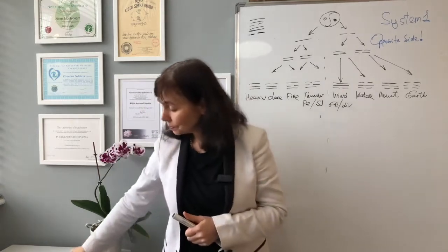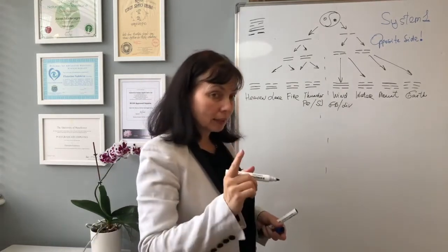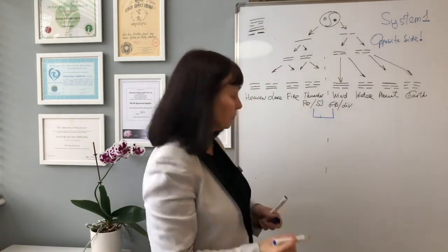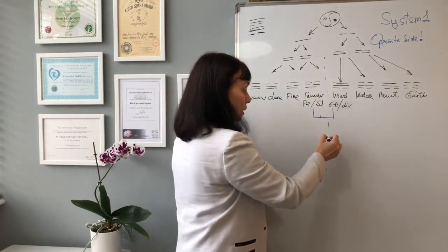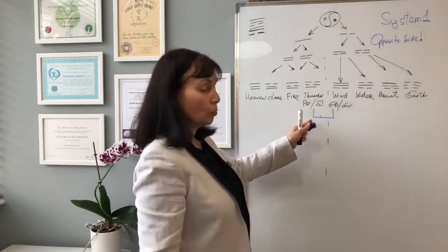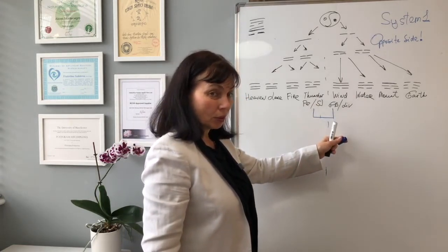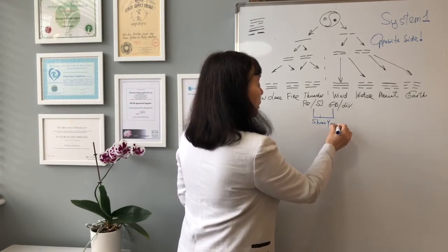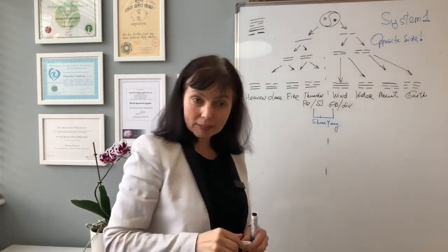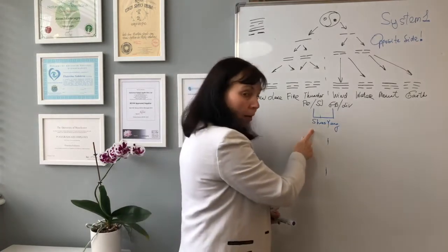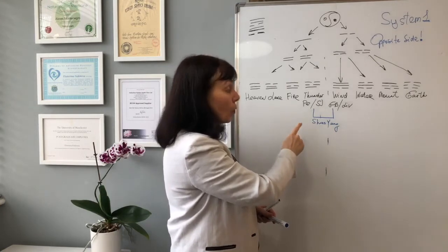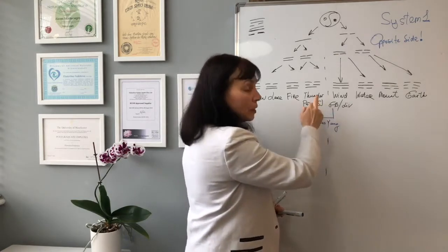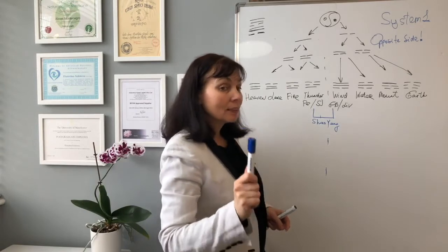Now we come to understanding that Sanjiao and Gallbladder, if we connect them, you can see the symmetric line here. How do we call the channels Sanjiao and Gallbladder? Shaoyang — this is Shaoyang. And the balance method says that Shaoyang treats itself. So Sanjiao will treat Gallbladder, and the Gallbladder channel will treat Sanjiao on the opposite side.